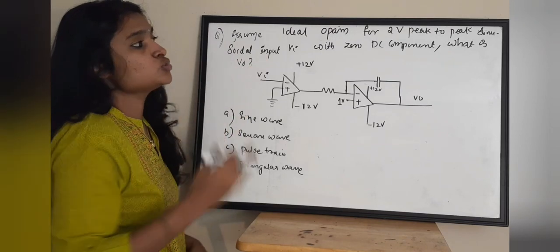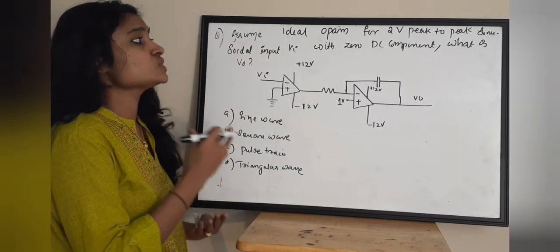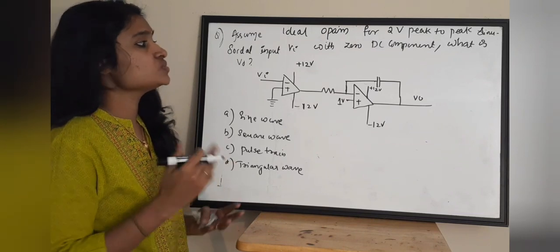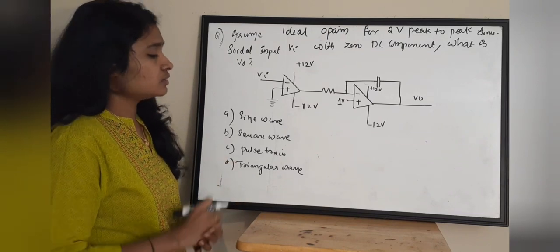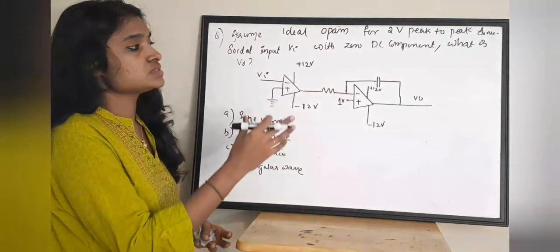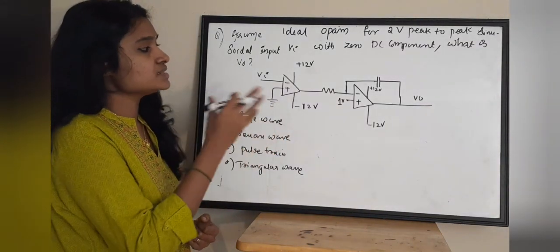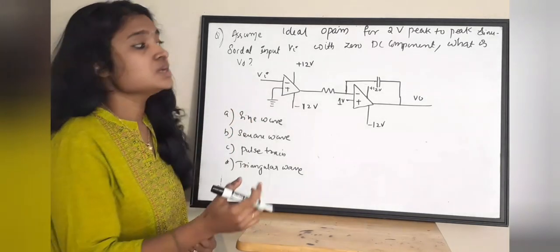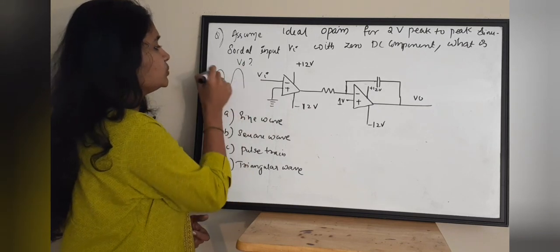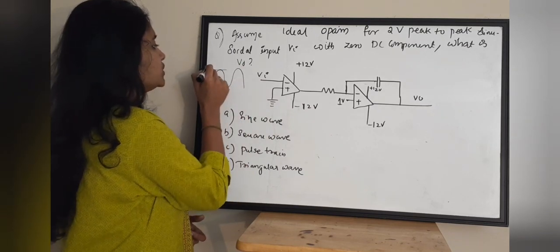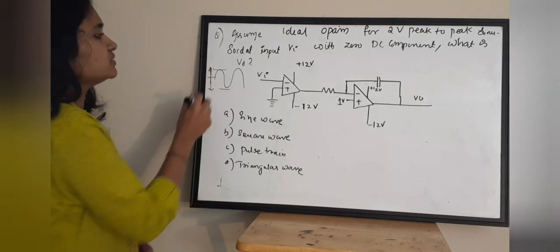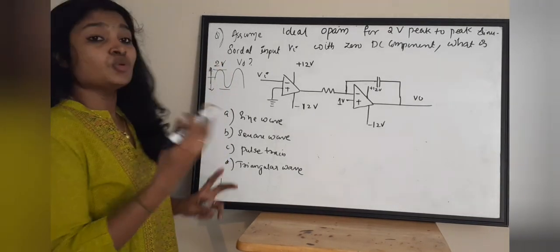Assume ideal op-amp. For a 2 volt peak-to-peak sinusoidal input VI with 0 DC component, what is V out? We need to find the output waveform. This circuit consists of two operational amplifiers and the input given to the first amplifier is a sinusoidal input with 2 volt peak-to-peak.